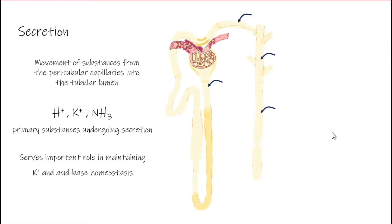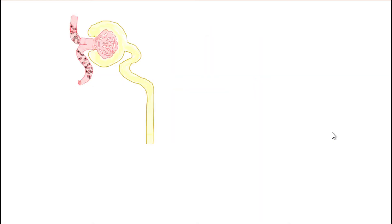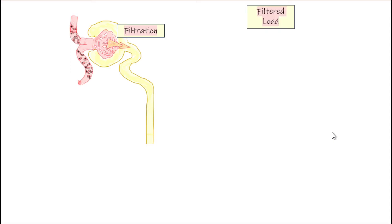The role of secretion is particularly to help maintain potassium homeostasis as well as to assist with acid-base balance. Another important term is the filtered load — the total amount of a substance that we filter into Bowman's space. Filtration is the movement of material out of the glomerular capillaries into the tubular lumen in Bowman's space, and the total amount of substance filtered is the filtered load.